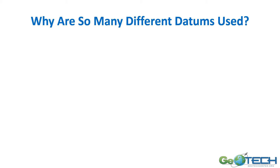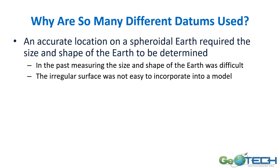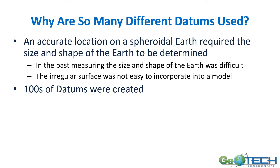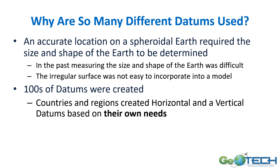Why are there so many different datums — literally hundreds of them? The calculation of a spheroid requires the size and shape of the earth, and up until modern measurement techniques it wasn't easy to calculate or determine. The earth is also very uneven and lumpy, so it's not easy to incorporate into a model. Hundreds of datums were created mainly because each regional area really needed its own datum — a place that only cared about local mapping created its own horizontal and vertical reference system for its own needs.